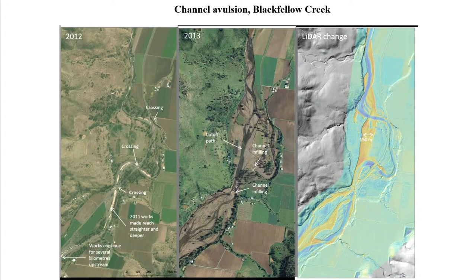That's an example of Blackfella Creek, which runs into Tent Hill Creek just out from Gatton — where the creek used to go around through there and then it's taken all that area, the whole channel's changed.